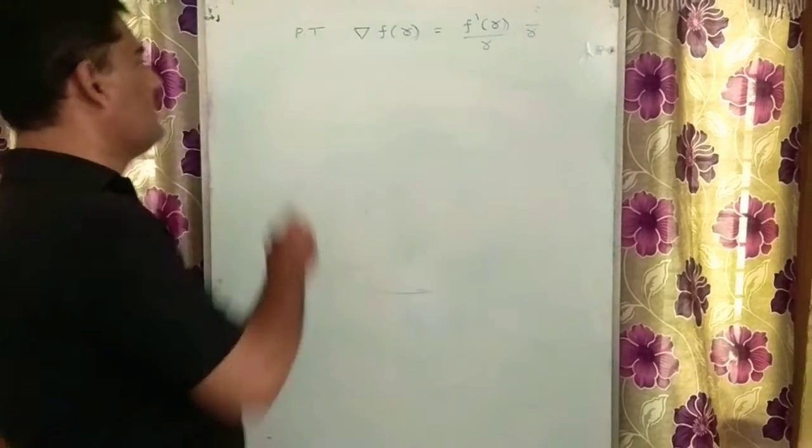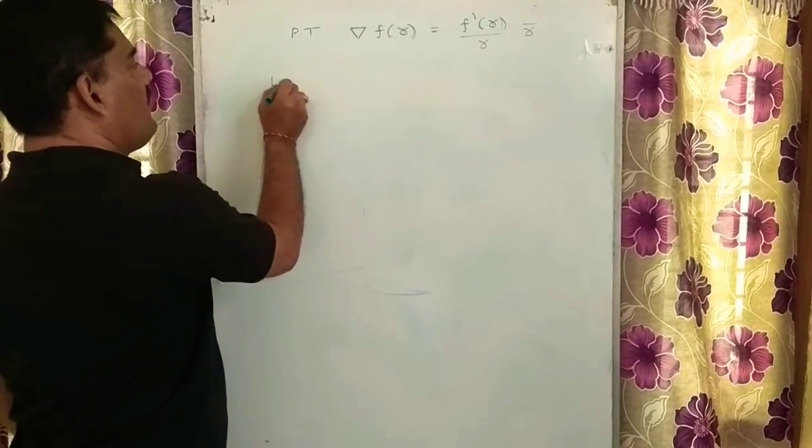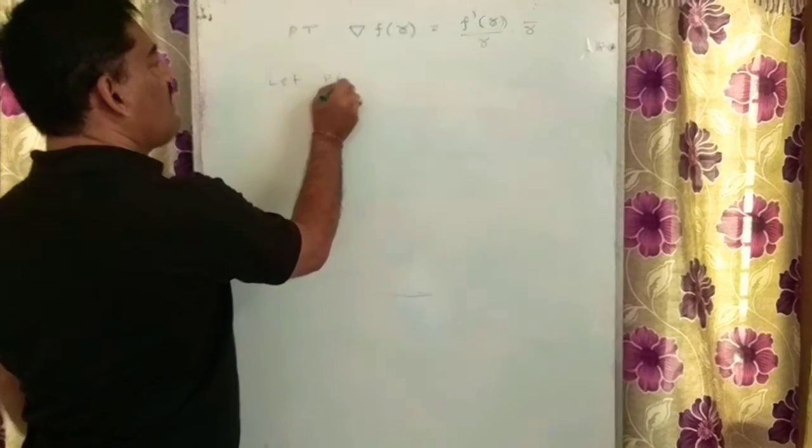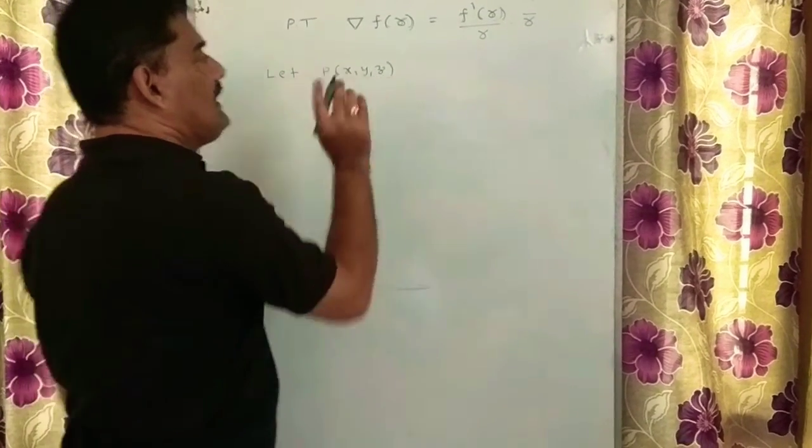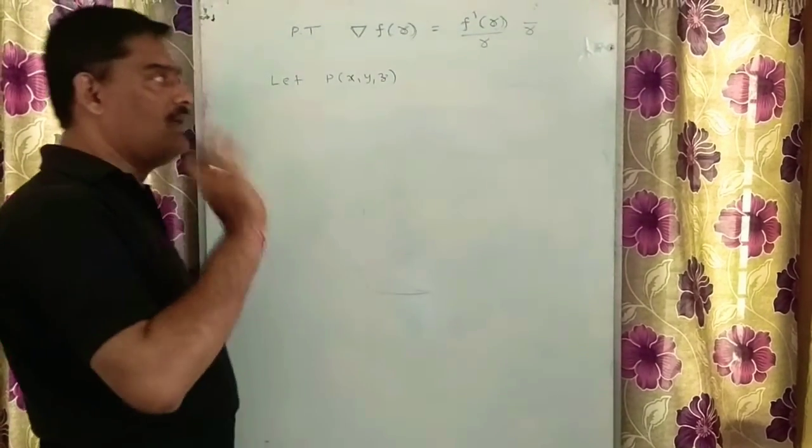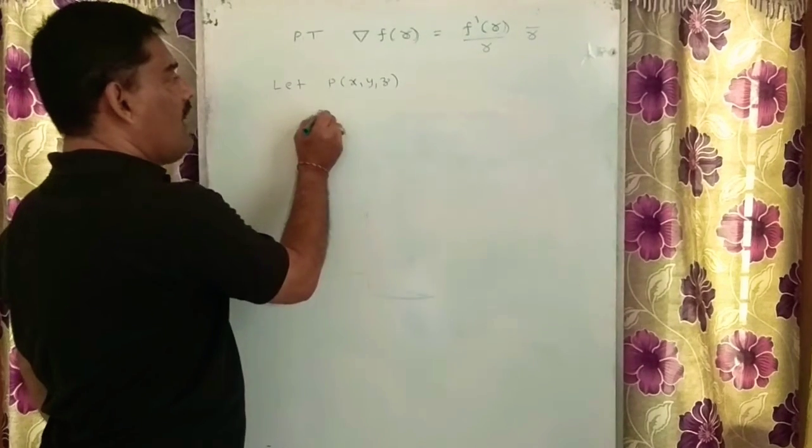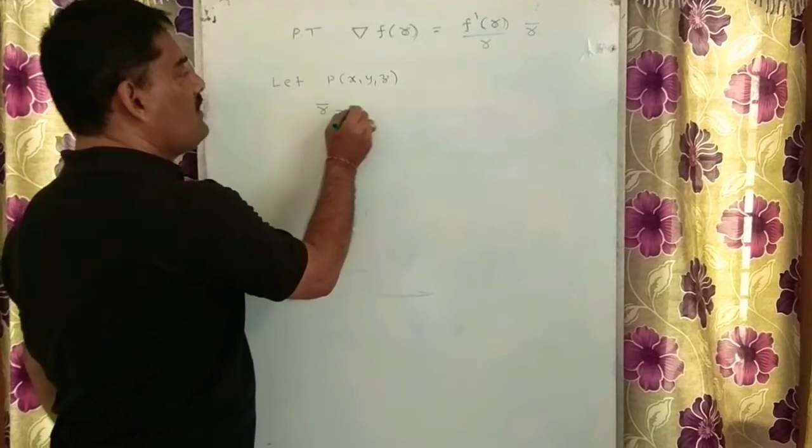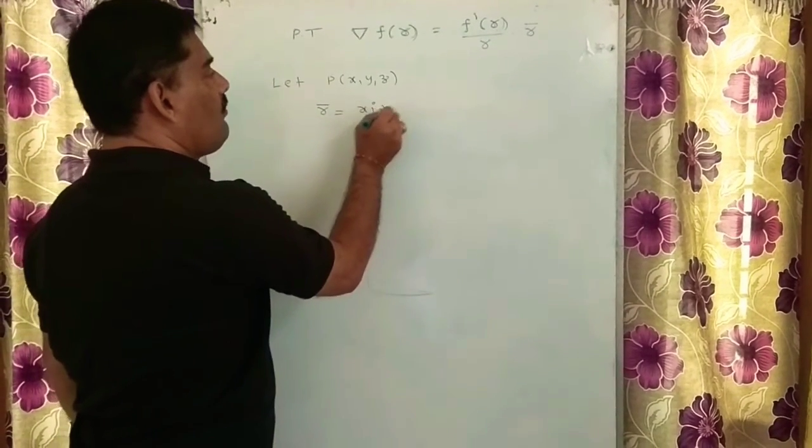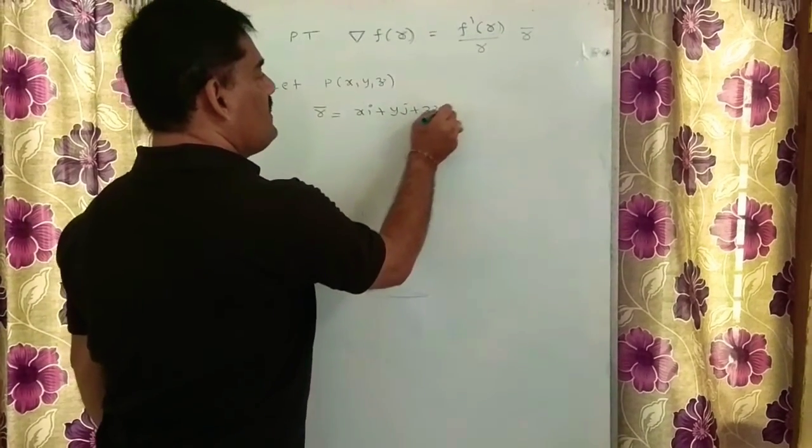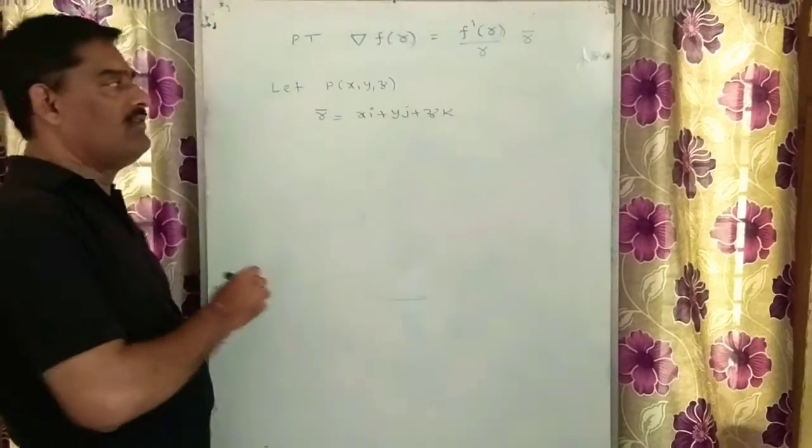In order to have an idea, let us start with p of x comma y comma z. This is a point in a three-dimensional plane. Corresponding to this, r bar is simply denoted by xi plus yj plus zk. This is what we call the positional vector.